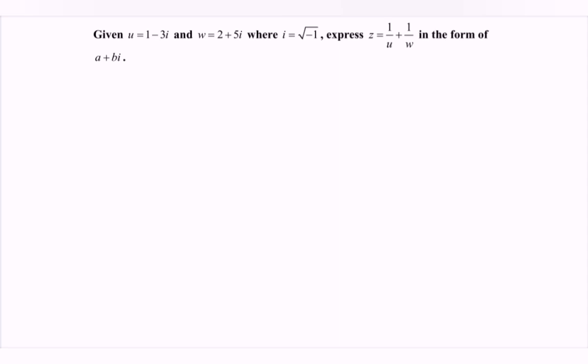So we substitute into the equation. We have z equals 1 over u plus 1 over w. So 1 over u plus 1 over w.